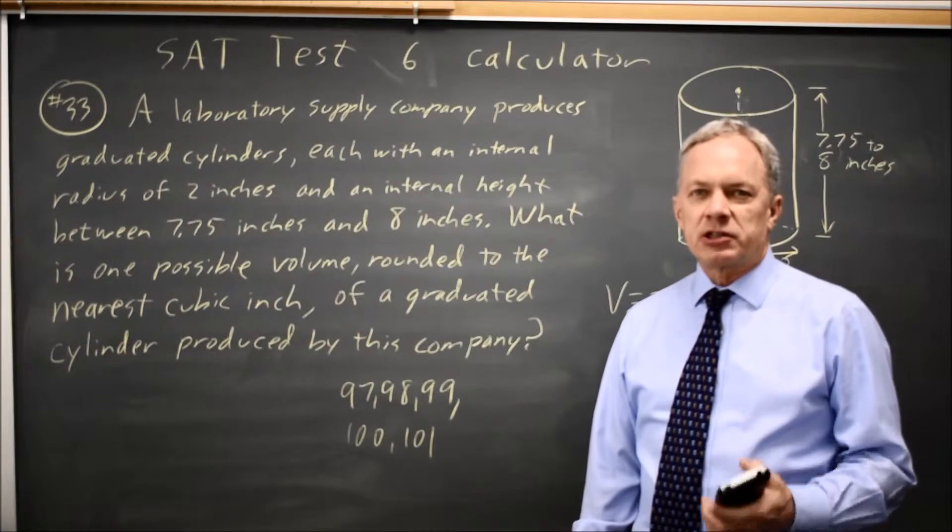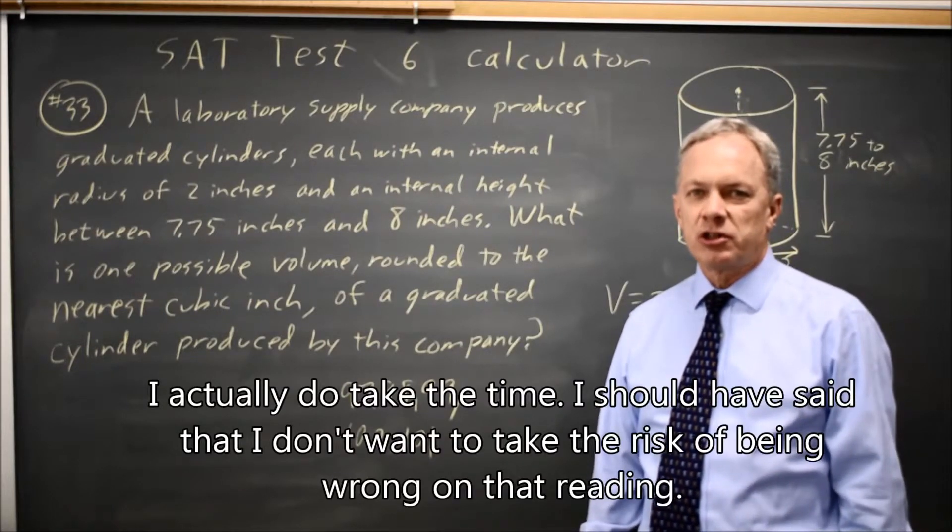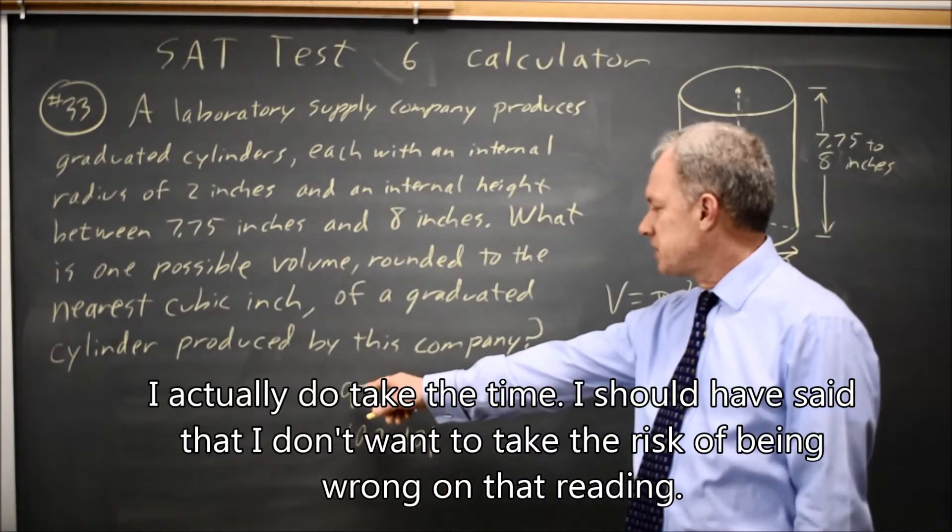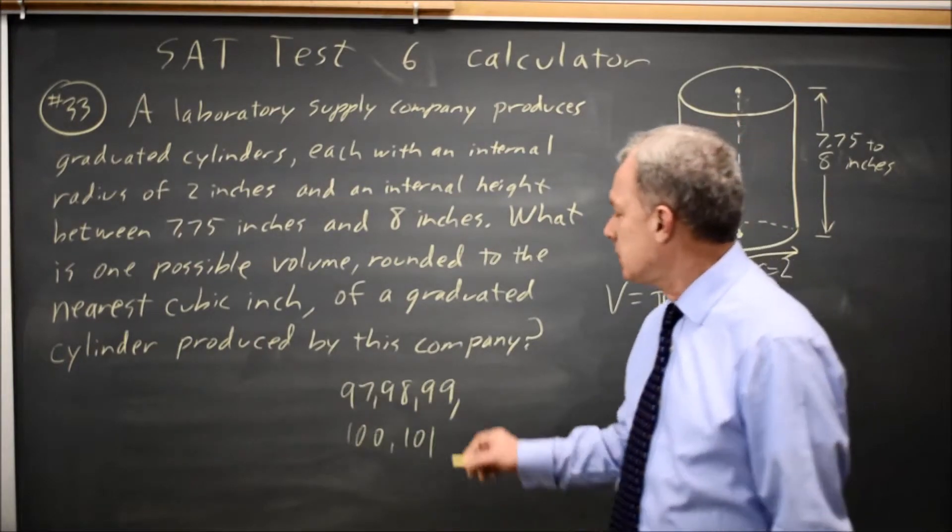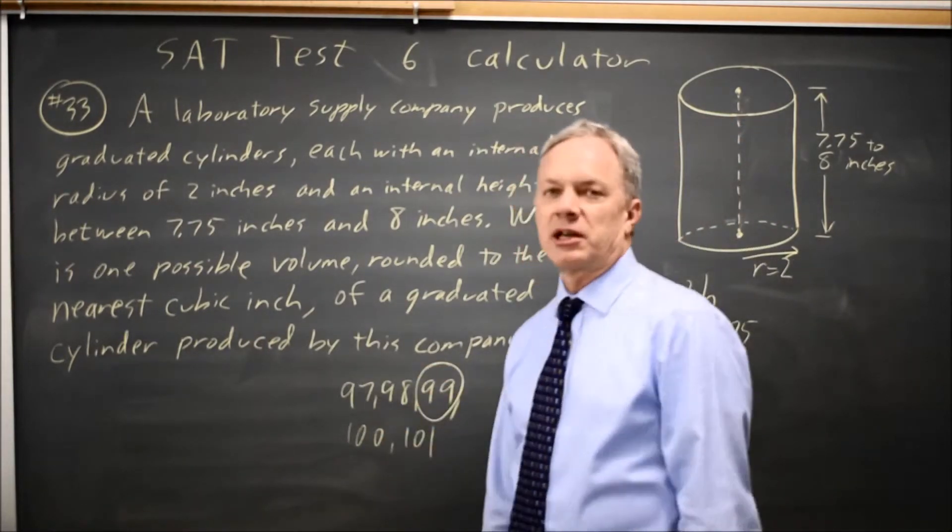Because I don't want to take the time to read carefully enough to know whether I'm allowed to round down to 97 and whether I'm allowed to round up to 101, I'll typically take a middle number like 99.